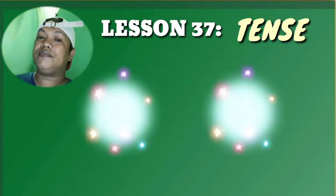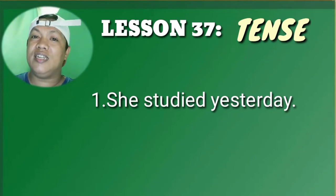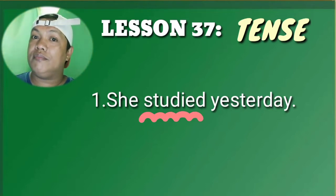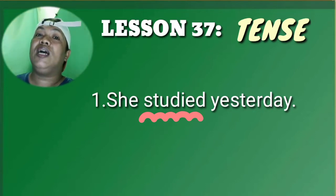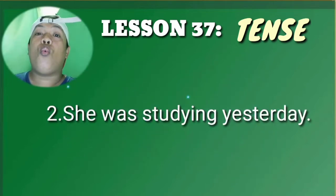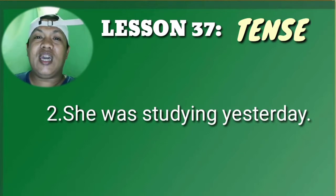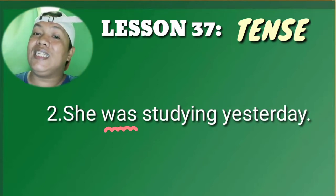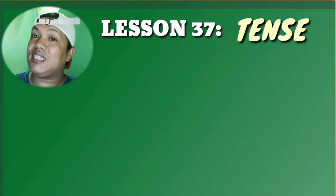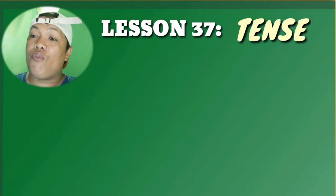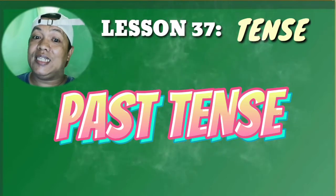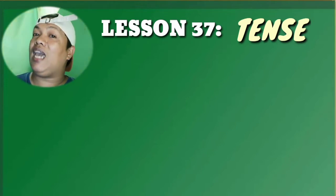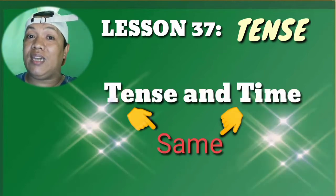Take a look at the following sentences on your screens. Sentence one: 'She studied yesterday.' The underlined word is 'studied.' Sentence two: 'She was studying yesterday.' The underlined word in sentence two is 'was.' In sentences one and two, the tense of the underlined verbs as seen in their forms is in past tense, and the time being talked about is also in the past.